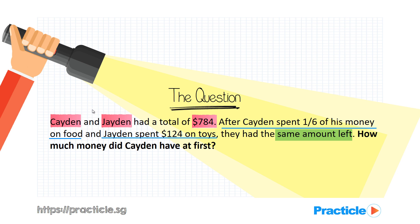We have two choices: the first is to work from the front to the back, and the other is to work from the back to the front. But in this case, since we have no idea how much Caden and Jayden each had in the beginning, it would be very hard to draw the model working from the front. So an easier way would be to work backwards.